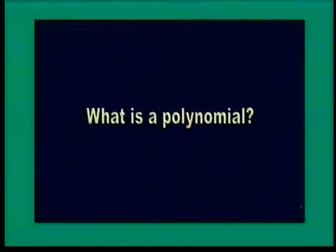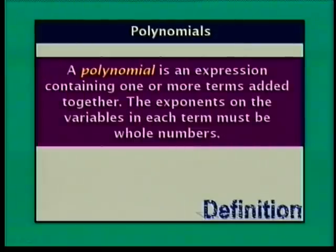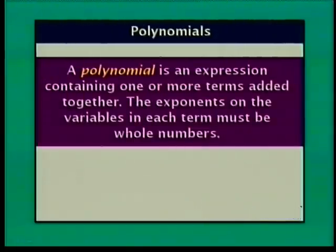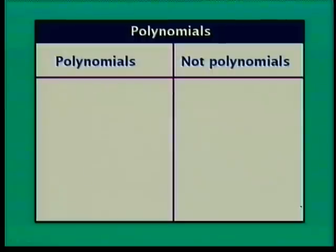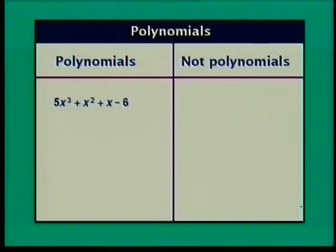So what is a polynomial? A polynomial is an expression containing one or more terms added together. The exponents on the variables in each term must be whole numbers. For example, 5x cubed plus x squared plus x minus 6 is a polynomial — it has four terms, and the variable terms all have whole number exponents: 3, 2, and 1.